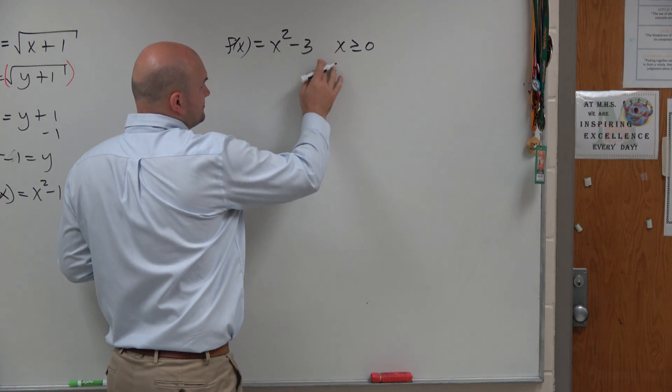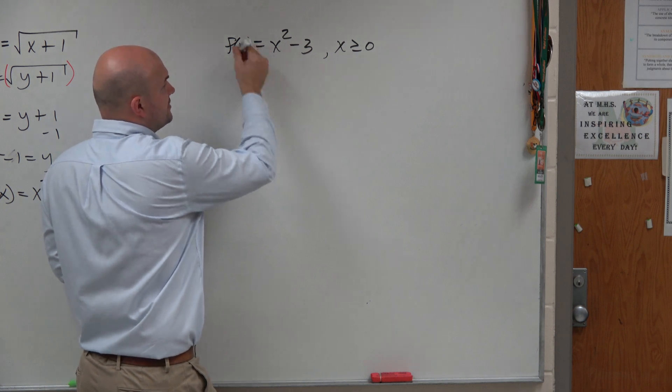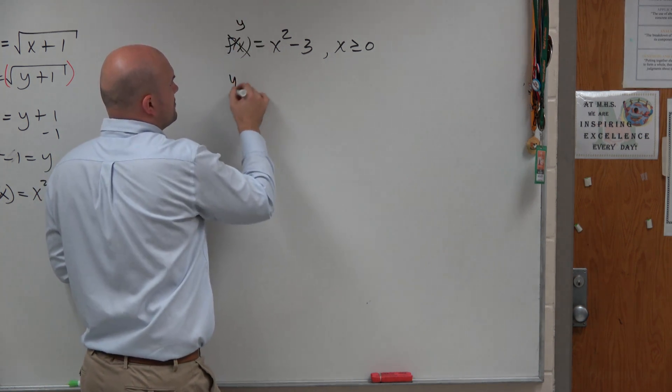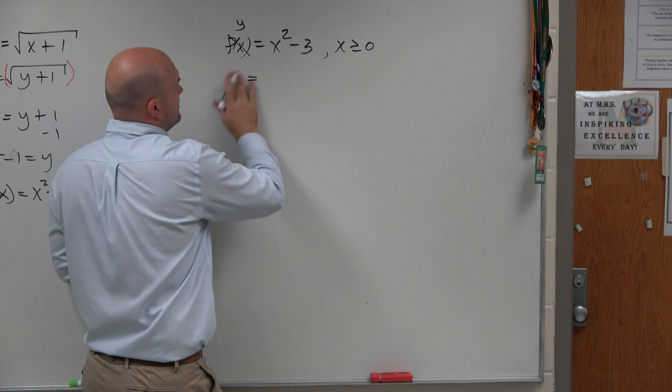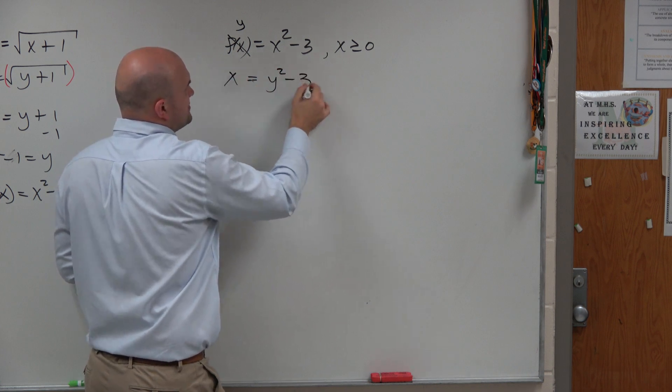In this example, what we're doing is the same thing. We're going to swap the variables, so x equals y squared minus 3.